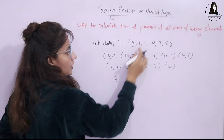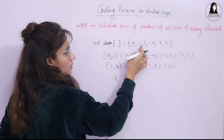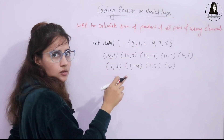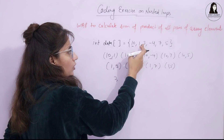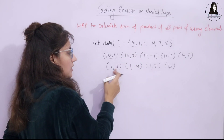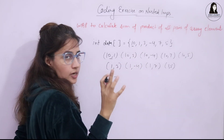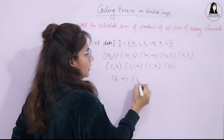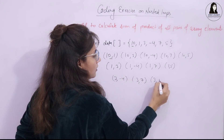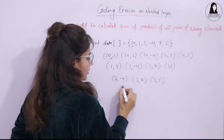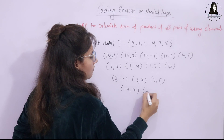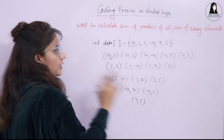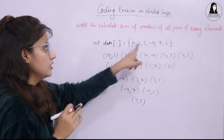For 3, the pairs are: 3 with -4, 3 with 7, and 3 with 5 — since 3 with 1 and 3 with 10 are already covered. Same logic continues: -4 with 7, -4 with 5, and then 7 with 5. These are all the pairs for these array elements.